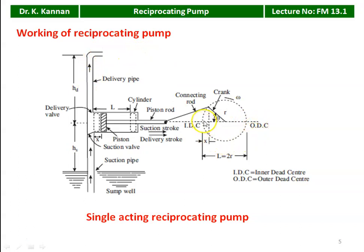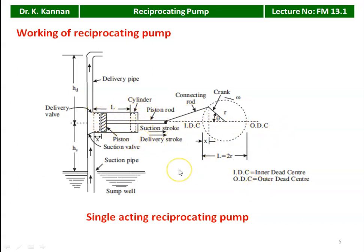When the piston reaches IDC, the next suction stroke begins, and the water is again drawn into the cylinder, compressed, and delivered. The distance of reciprocating motion between IDC and ODC is called the stroke length of the cylinder. From the diameter and stroke length, we can calculate the volume of liquid handled or delivered by the single acting reciprocating pump.